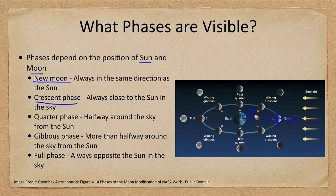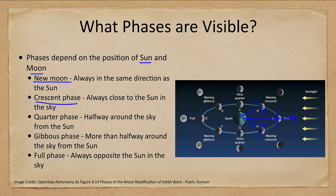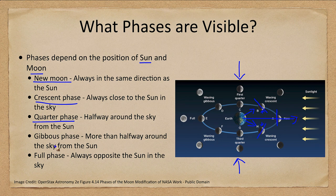In the crescent phase it will always be close to the sun in the sky, and we would be seeing only that tiny portion that faces Earth. You will see the crescent phase shortly after sunset or shortly before sunrise. By the time you get to the quarter phase, you're now halfway around. In first quarter it's the right-hand side of the moon that appears illuminated, and in third quarter it's the left-hand side that appears illuminated.